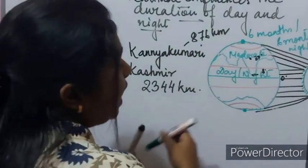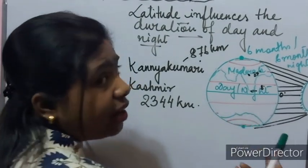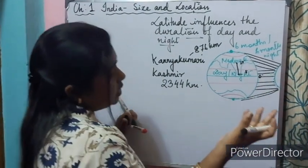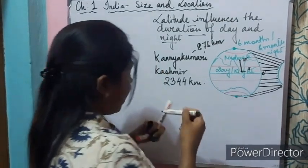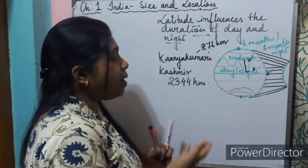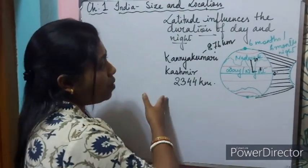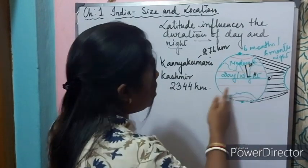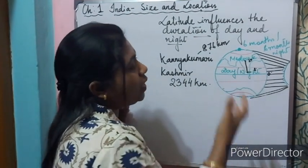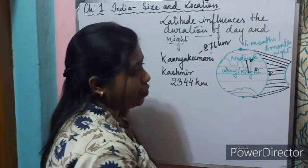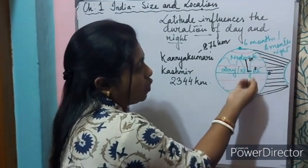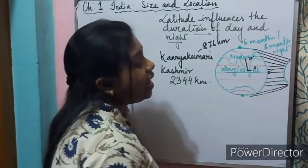Therefore, in Kanyakumari, which is very close to the equator, the difference between day and night is hardly felt — daylight lasts for a longer duration. In Kashmir, being farther from the equator, it receives moderate sunlight, so the duration of day and night can be clearly felt. This is why the textbook question asks why the difference is felt in Kashmir but not in Kanyakumari.